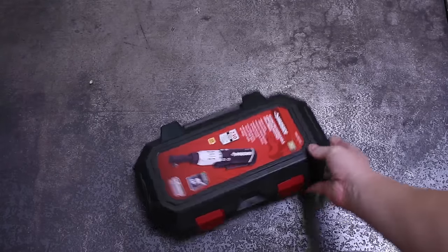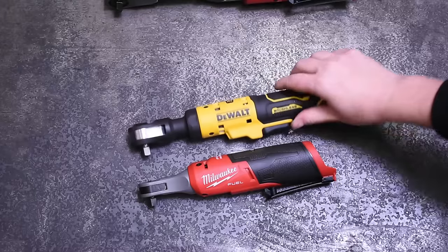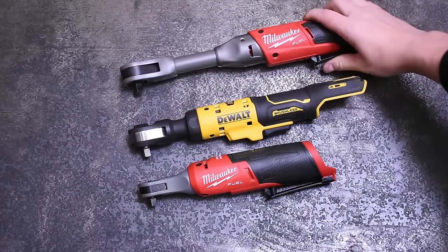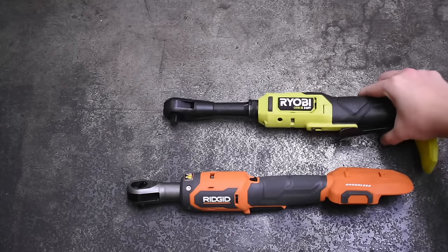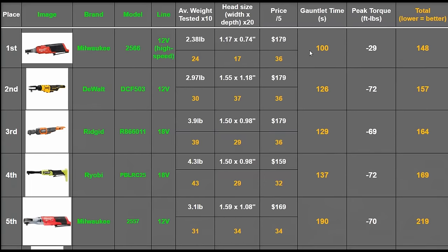Welcome back to the Torque Test Channel. When it comes to cordless ratchets, so far on the channel we've scratched the surface with Milwaukee, DeWalt's new ratchet, Rigid's new ratchet, and Ryobi. And well, they've performed pretty closely by our measure.